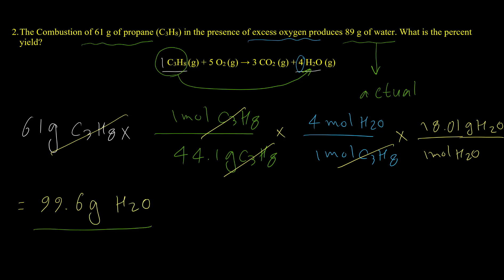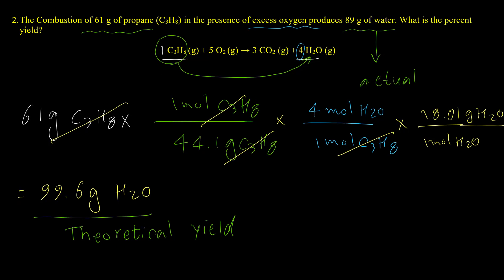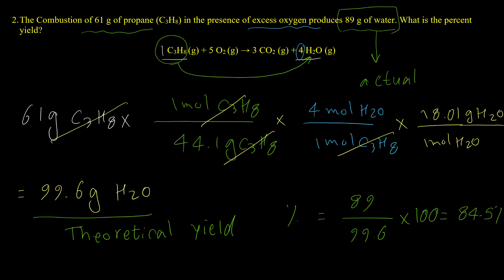The final answer is 99.6 grams of water — this is the theoretical yield, the maximum possible amount of product. Normally we have less than that. The actual yield is 89 grams and the theoretical yield is 99.6 grams, so the percent yield equals 89 over 99.6 times 100, which equals 84.5%.